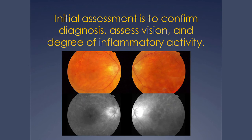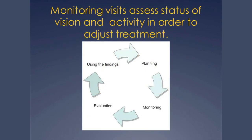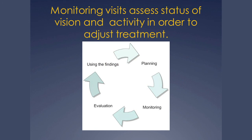To summarise: the initial assessment is to establish the diagnosis, and your ophthalmologist will probably want to wait for the HLA-A29 blood test before confirming it. We'll then look at the current state — how much inflammation is going on and what the overall level of vision is — before deciding on treatment. At subsequent monitoring visits, some or all of the tests mentioned will be used to see how well treatment is doing. That's the subject of the next talk. Thank you very much.